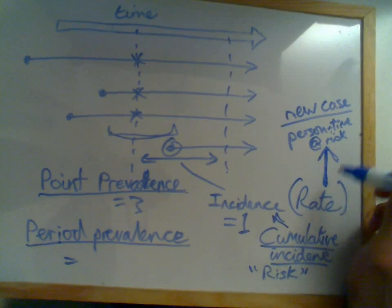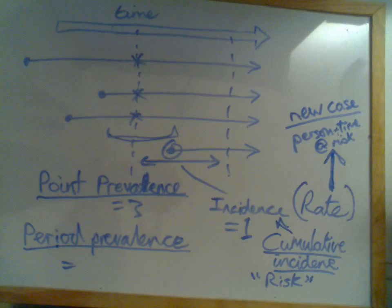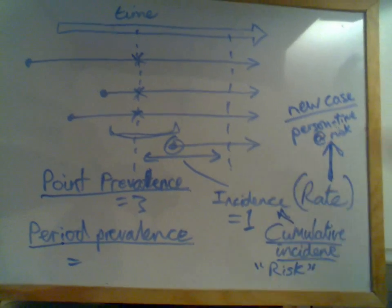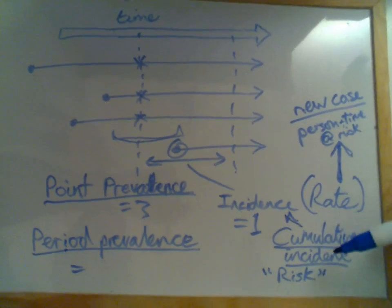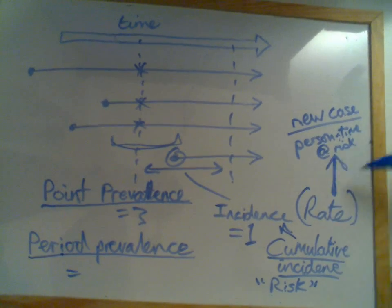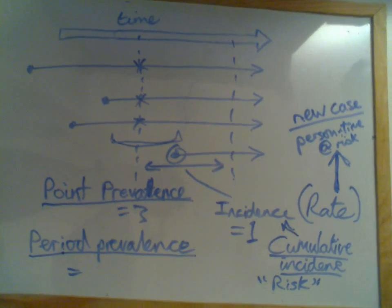Whereas incidence rate is more useful for a dynamic population. Maybe a city, say like London, where you've got loads of people coming and going. Or you're looking at a specific ethnic group who are very mobile. They might be going to their home country and coming back here. So cumulative incidence won't give a very accurate measure. We need something more like an incidence rate for this dynamic population.